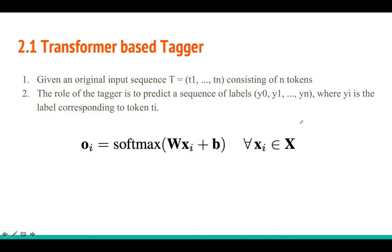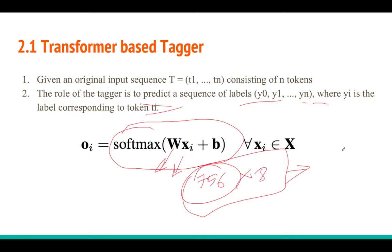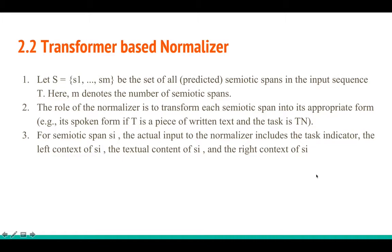More formally: given input tokens t1, t2, ..., tn — where t0 is the TN or ITN label — the tagger predicts a sequence of labels y0, y1, ..., yn, where yi corresponds to token ti. This is a softmax classifier on top of the transformer. Using, say, BERT-base-uncased, you get a 768-dimensional feature vector, multiply by a weight matrix, add bias, apply softmax, and predict eight classes — done for every time step.